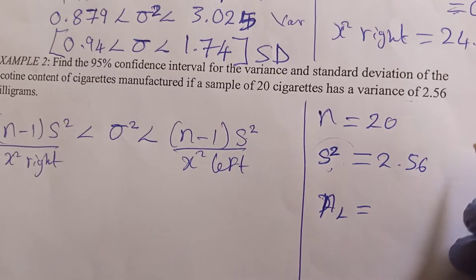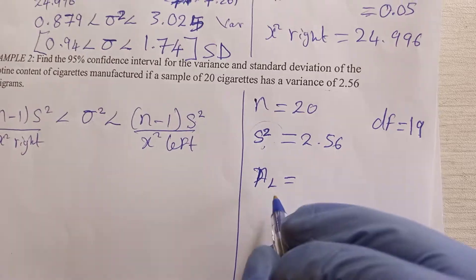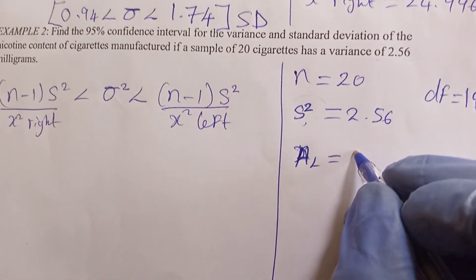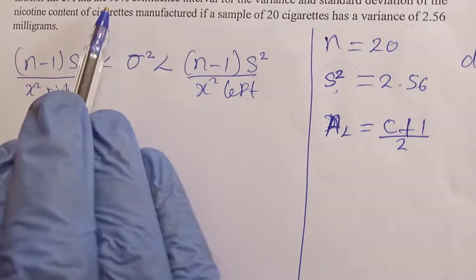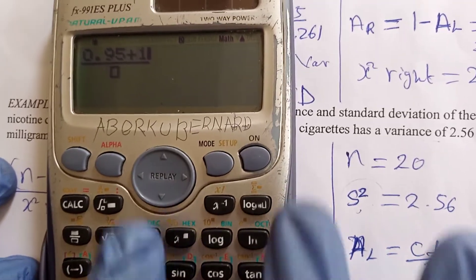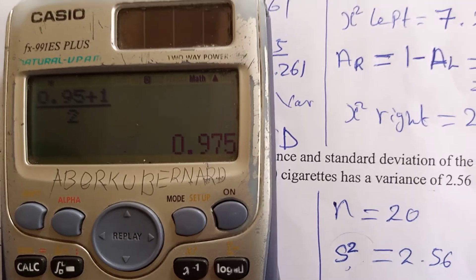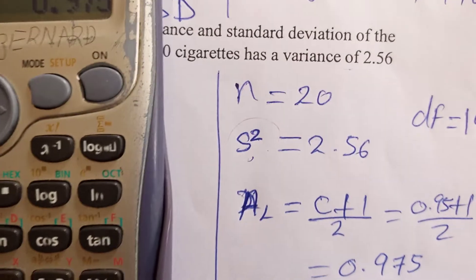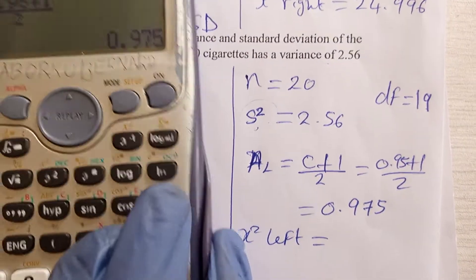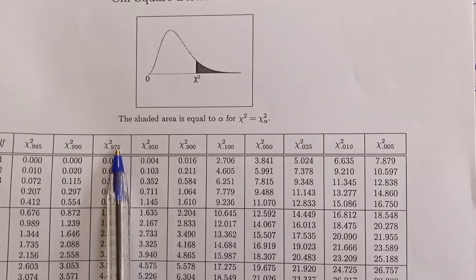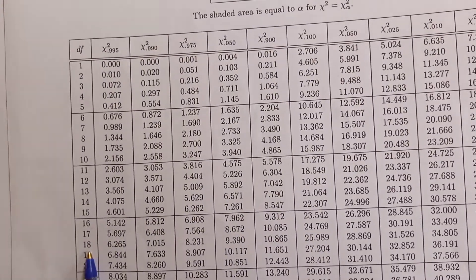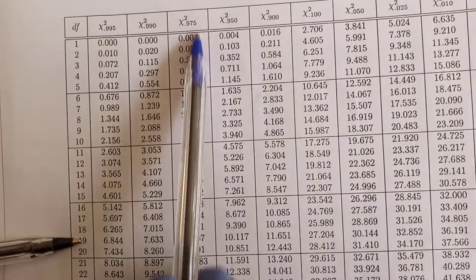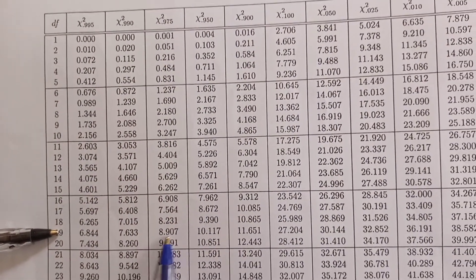The degree of freedom is 20 minus 1, which is 19. The area to the left is (C plus 1) divided by 2. Our confidence level is 95%, so 0.95 plus 1 divided by 2 gives 0.975. Looking up the chi-square table with area 0.975 and degree of freedom 19, we get chi-left equals 8.907.